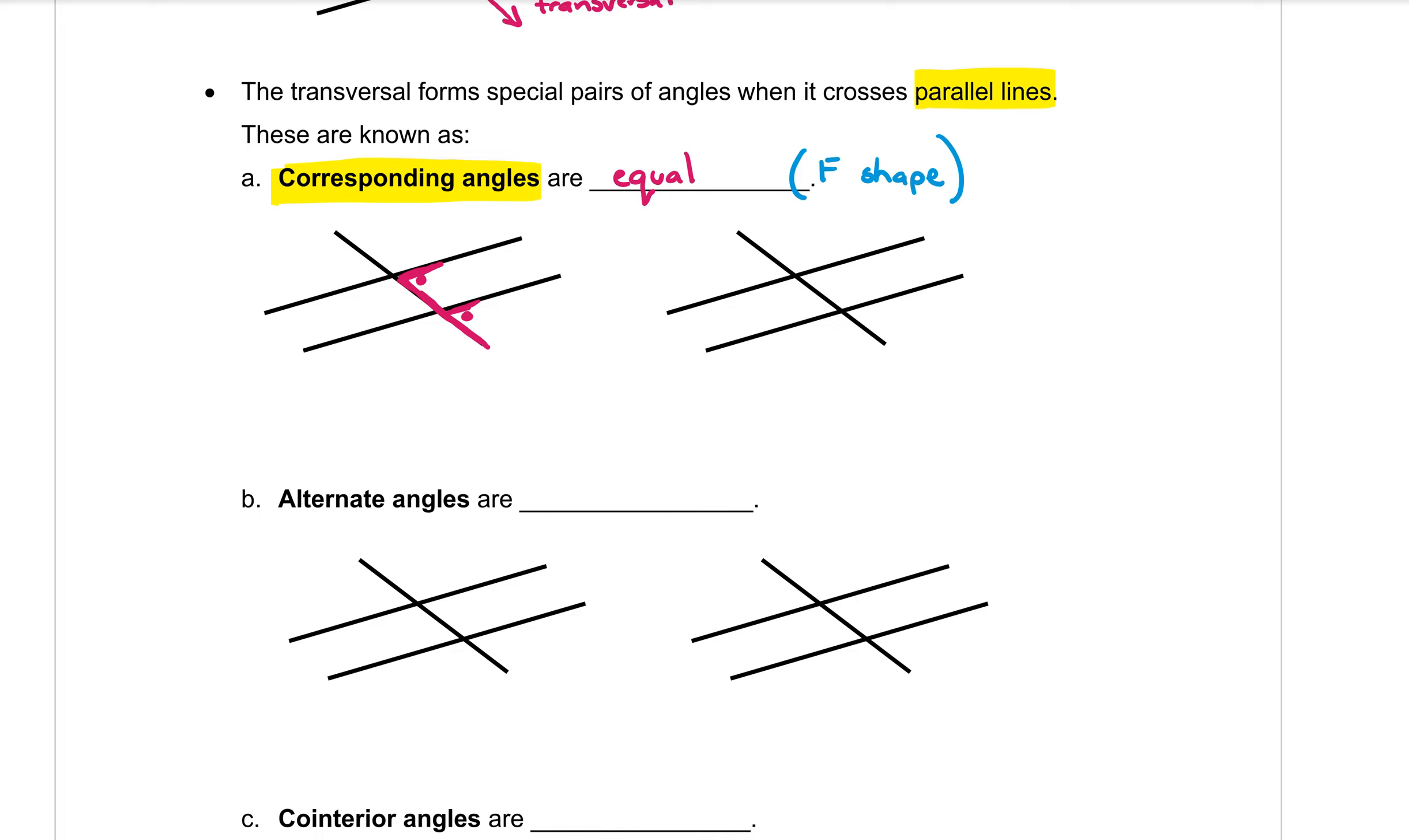Now the F shape doesn't always have to be the right way around. It can be back to front, it can be upside down, it can be back to front and upside down. So there's a second one here. Let's draw an upside down back to front F here like that. Which means that this angle here and this one here would be corresponding angles as well.